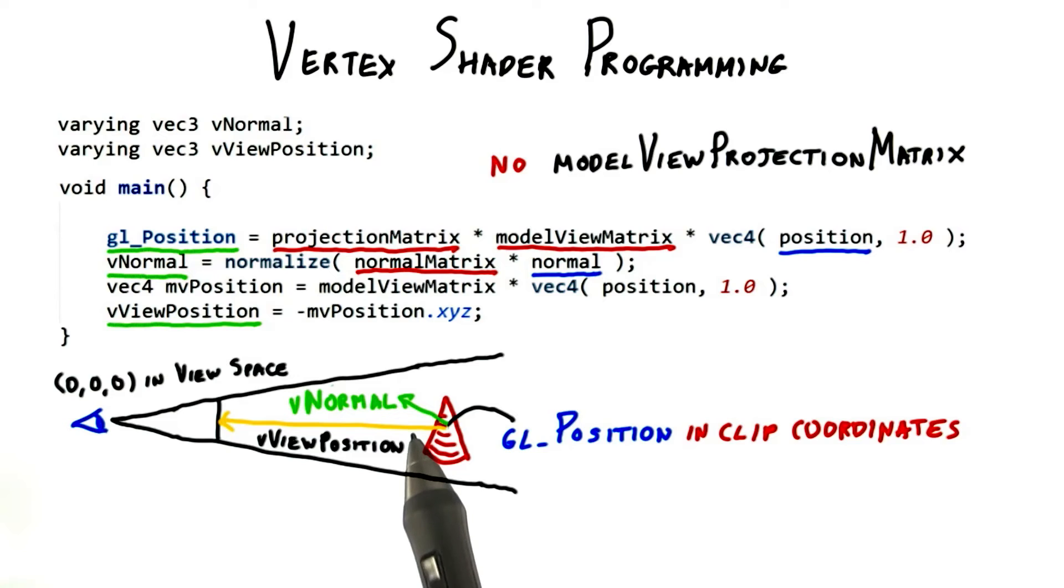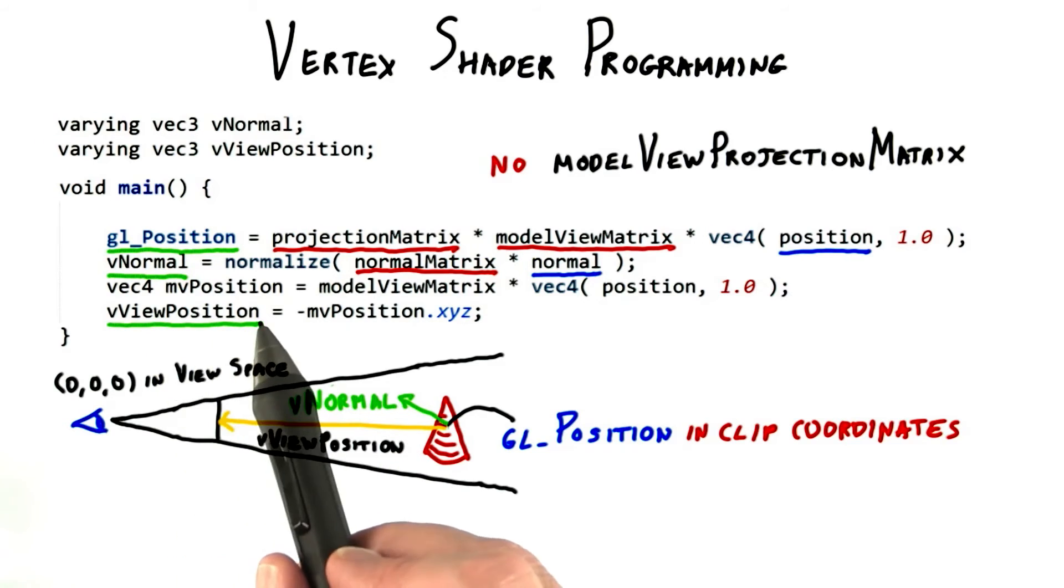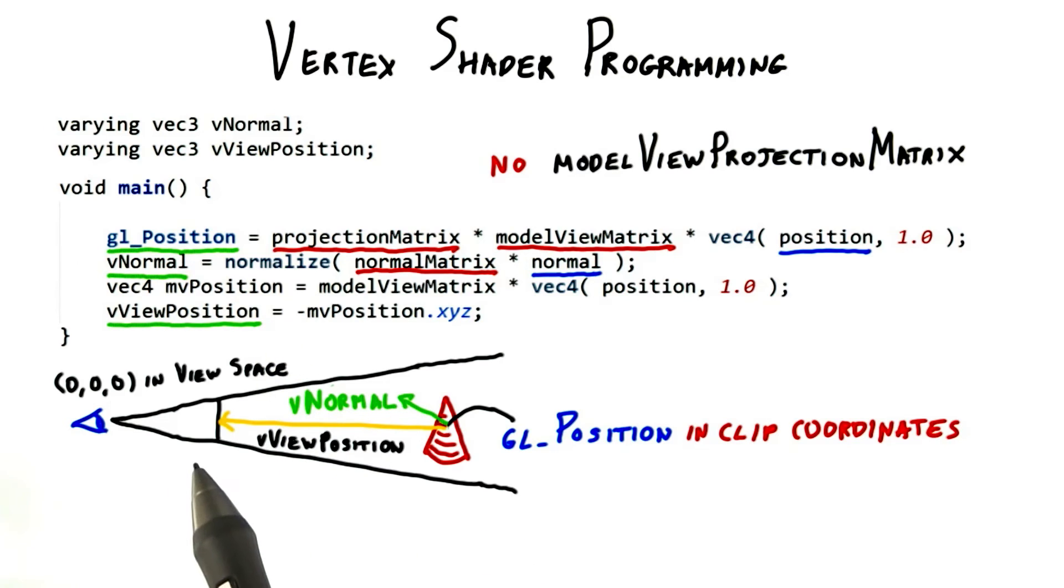Finally, a vector from the location in model view space toward the viewer is computed. First, the position in model view space is computed, and then negating this vector gives the direction toward the viewer from the surface, instead of from the viewer to object. Remember that the camera is at the origin in view space.